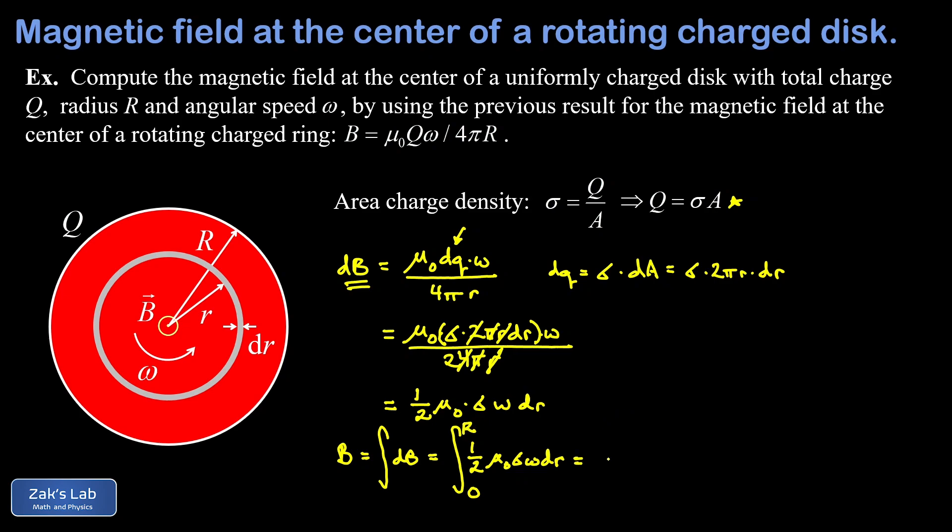Now this integral is trivial because everything there is constant except for dr. And when we integrate that, we just get R. Then when we evaluate across the limits of integration, the lower limit is going to give us zero. And the only survivor is capital R. So we'll just go ahead and write the final answer here as one half mu naught sigma omega times big R. So that's one way to write the final answer.